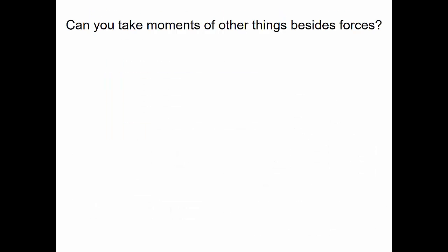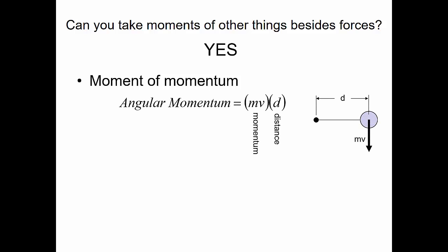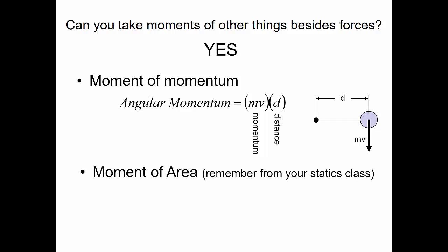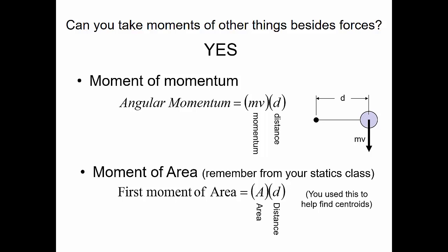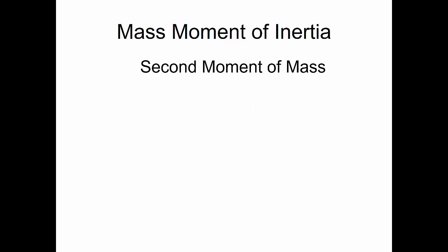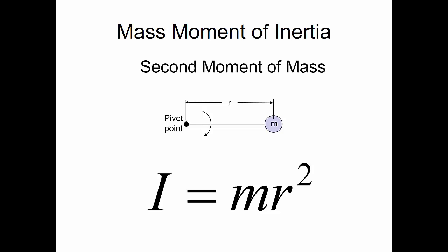Can we take moments of other things besides forces? Absolutely. As we move further in the course, we're going to take moments of momentum — this is how we calculate angular momentum. We take momentum, which is mass times velocity, and multiply it by a perpendicular distance D. We've also taken moments of area; the first moment of area is an area times its distance, used to find centroids. So a mass moment of inertia is simply the second moment of the mass. If a mass is out on a string at radius R pivoting about a point, the mass moment of inertia equals M times R squared.